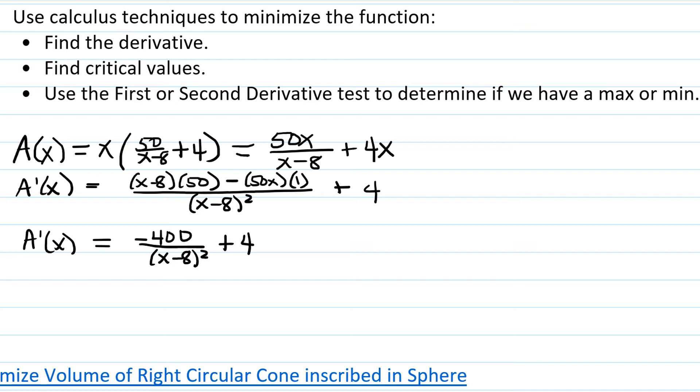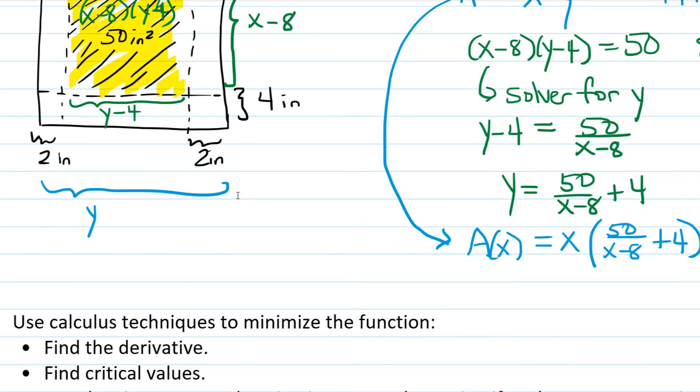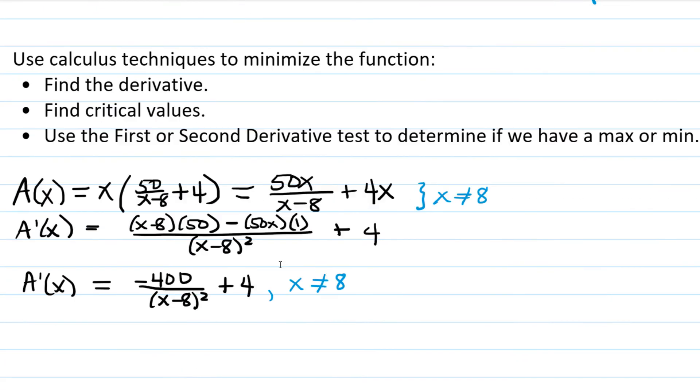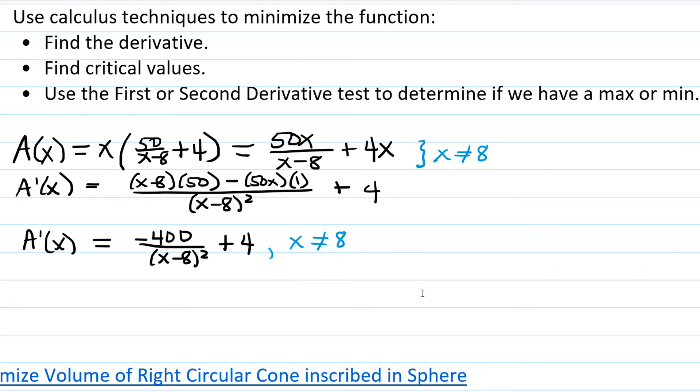Now let's observe some facts about the domain of the function and of the first derivative. The original function A of X is undefined when X is 8. X is not allowed to be equal to 8, and the same thing with the derivative, because in either case, that would make the denominator 0. Now let's think about the natural domain of this scenario. In order to be able to subtract 8 from X, X would have to be greater than or equal to 8. Actually, probably strictly greater than because you're not going to have a dimension of 0. So we're only really considering values that are X values greater than 8 anyway.